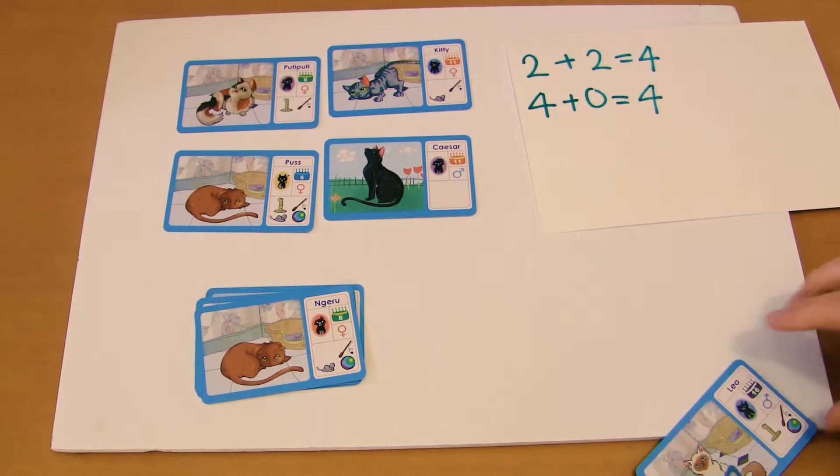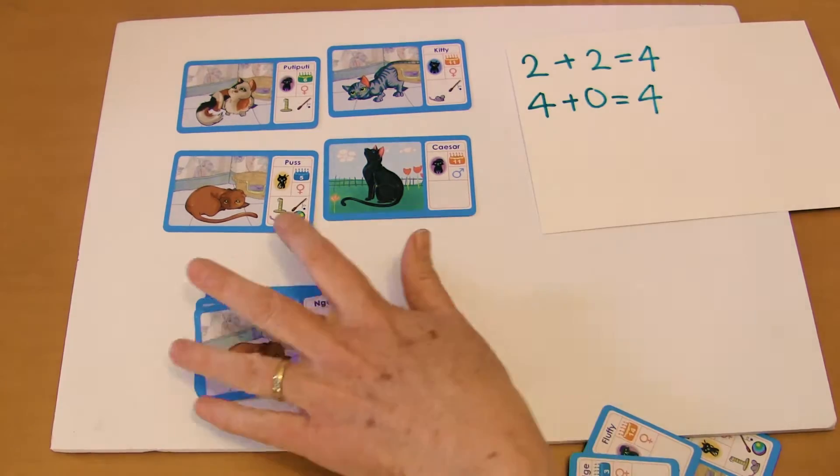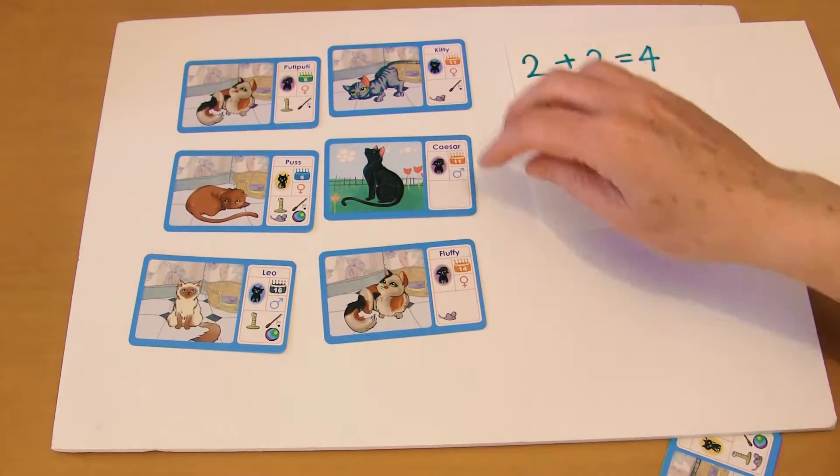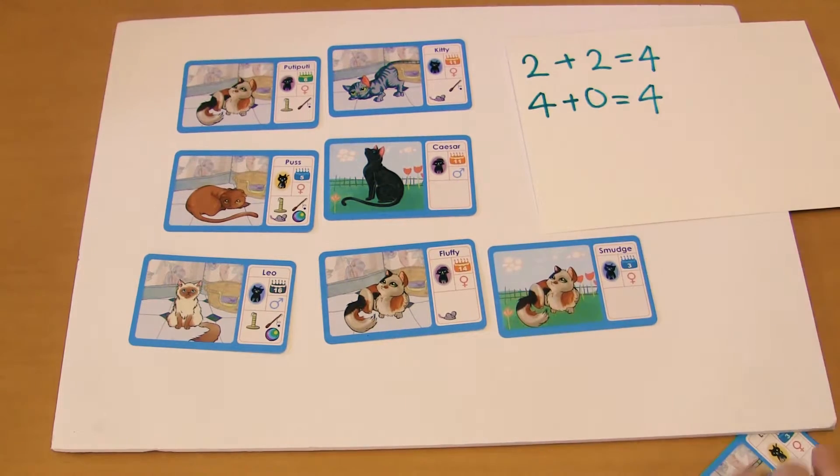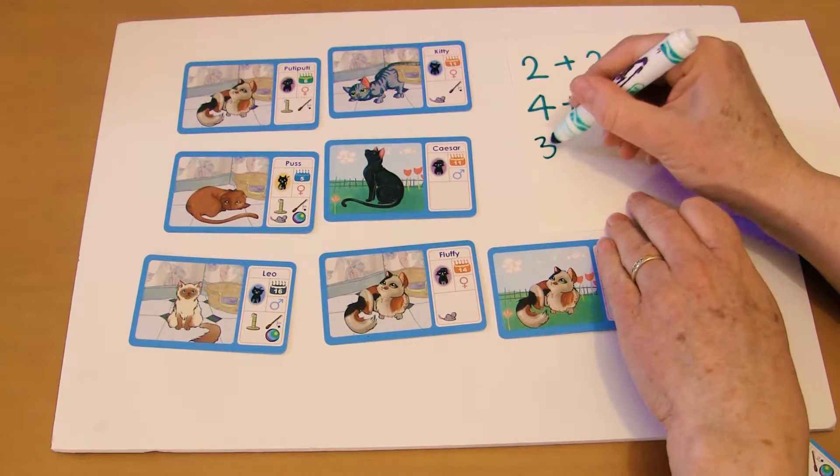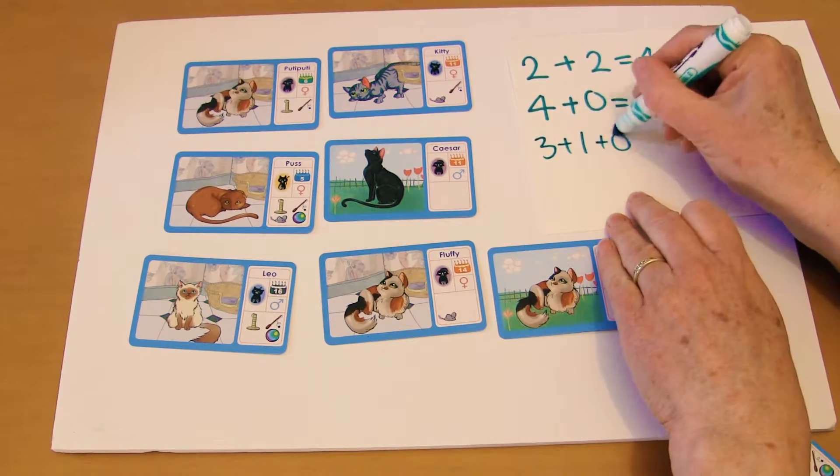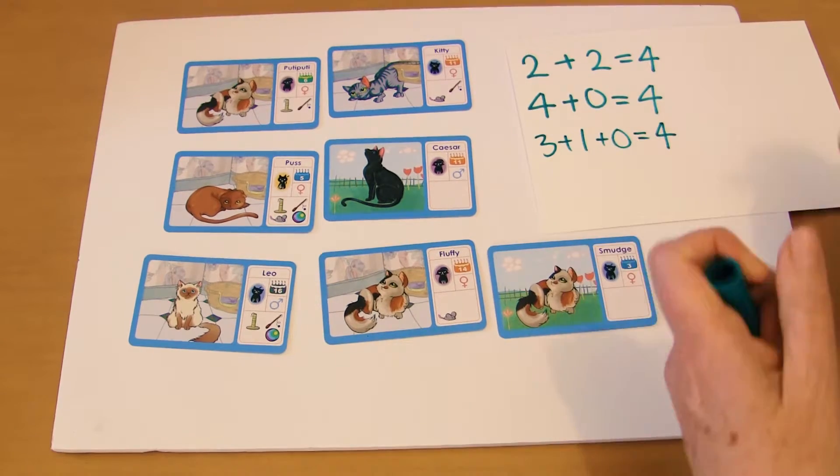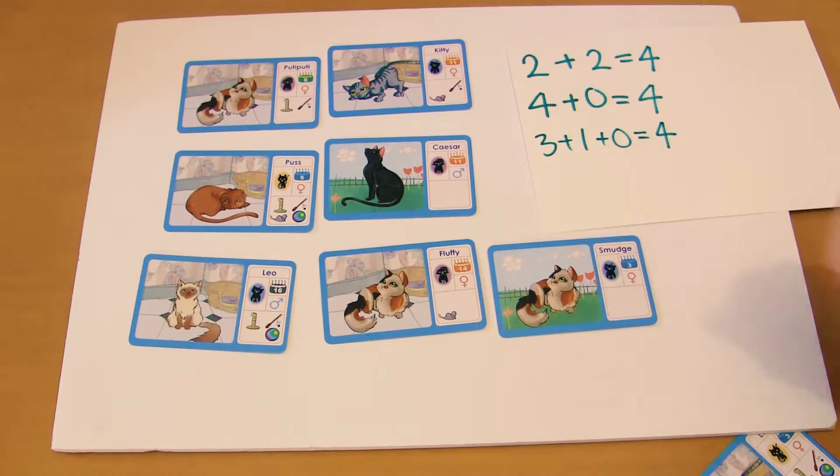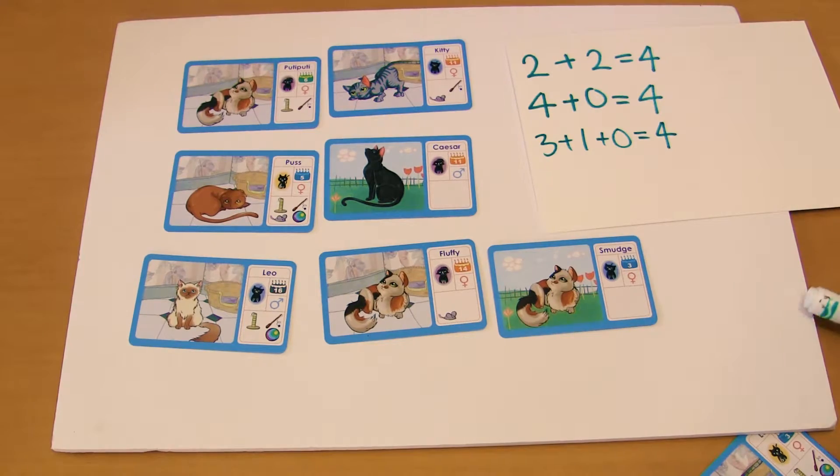Or they could have 3 plus 1 plus 0, so 3 plus 1 plus 0 equals 4. So they're just exploring different ways to make 4, or whatever number it is that you choose.